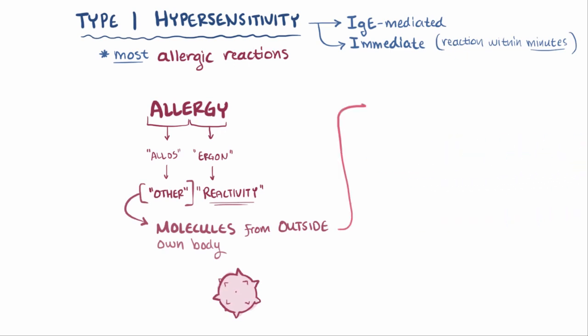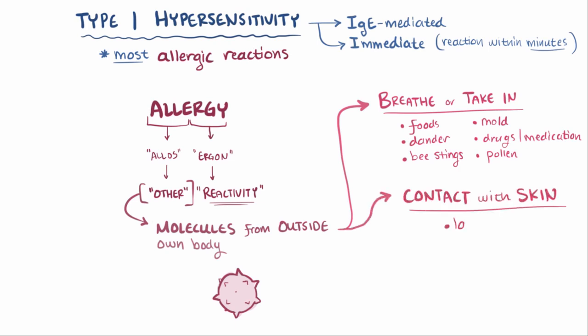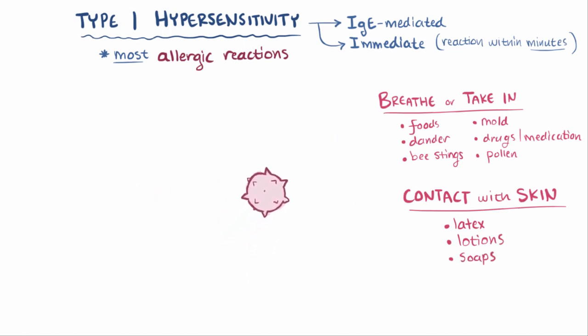These are specific molecules from things you might breathe or take in, like foods, animal dander, bee stings, mold, drugs or medications, and pollen. But you can also mount an allergic reaction to things you come in contact with on your skin, like latex, lotions, and soaps. These specific molecules are also called antigens, and when they cause an allergic reaction, they're called allergens.